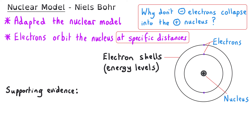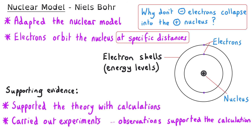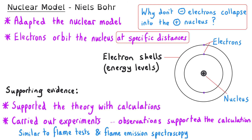Niels Bohr's conclusions were supported by significant evidence. He supported this theory with calculations, and he also carried out experiments where observations supported these theoretical calculations. You don't need to know the exact details of the experiments, but they were quite similar to the flame tests that we can do in a lab and to flame emission spectroscopy. These energy levels also went on to explain how atoms can absorb electromagnetic radiation, because the electrons themselves will move between the different levels of energy when they absorb energy as electromagnetic waves.